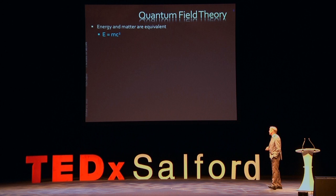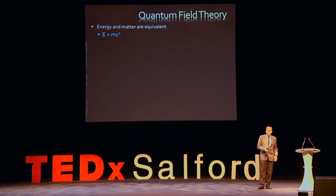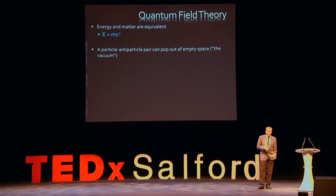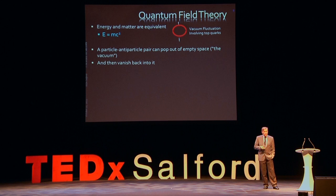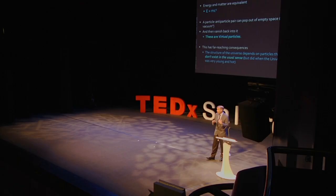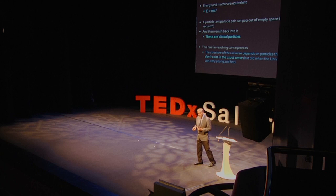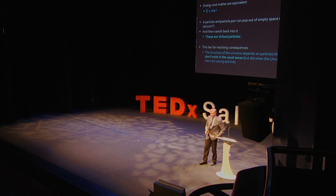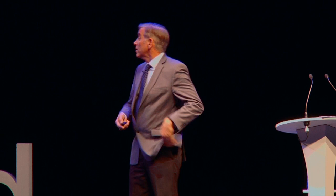The basis of quantum field theory is that energy and mass are equivalent. Strange things can happen — you can have a particle and an antiparticle pop into existence out of empty space, like two top quarks, and then vanish back into it. This is called a quantum fluctuation, and these are virtual particles. It sounds a bit magical, but it's actually critical to everything we understand. The structure of the universe depends on particles that don't exist in the usual sense, some of which existed earlier when the universe was much hotter and younger.